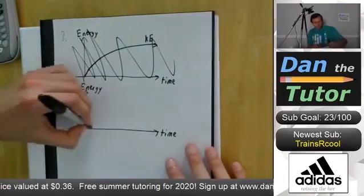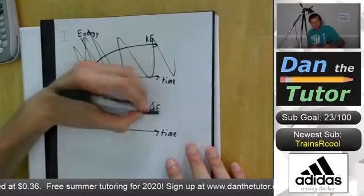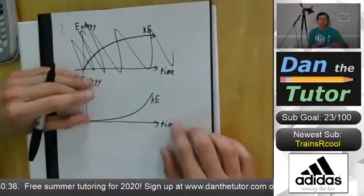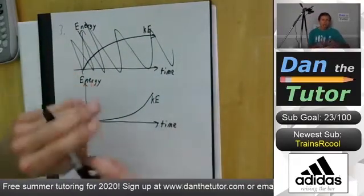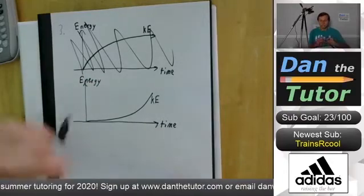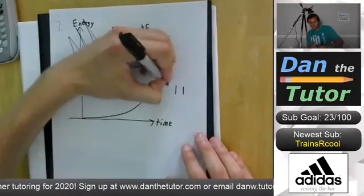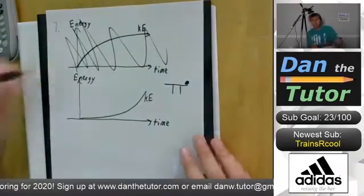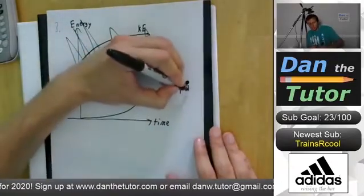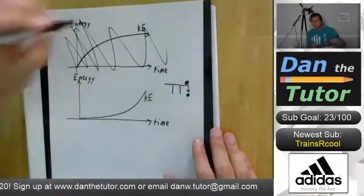So this is a more realistic graph of kinetic energy, and this actually can be the kinetic energy graph of an object falling off a table. I'm going to draw the table again. So here's my ball, and it falls off the table like this.